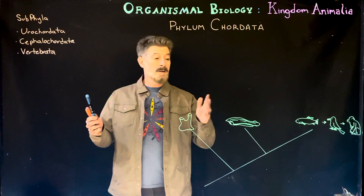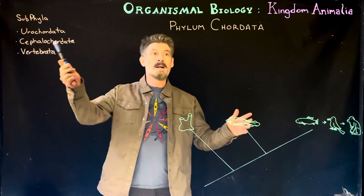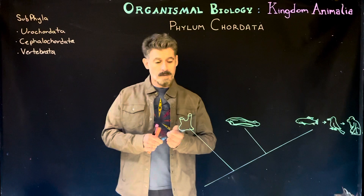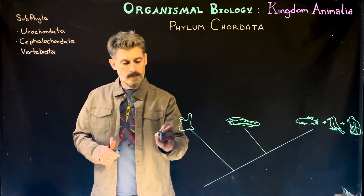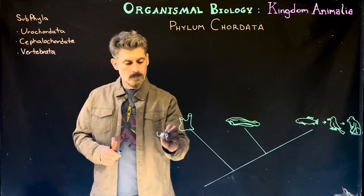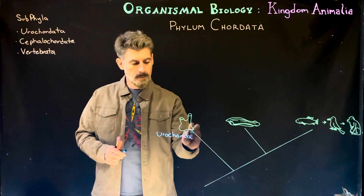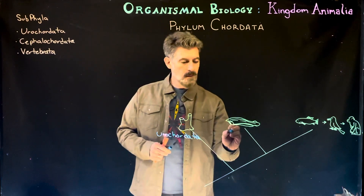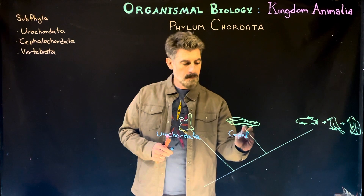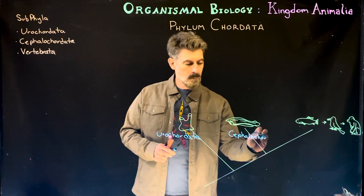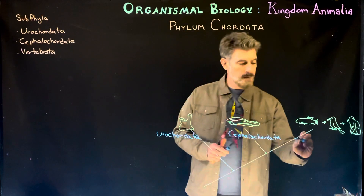We have three major subphyla for the Chordata: the Urochordata, the Cephalochordata, and the Vertebrata.